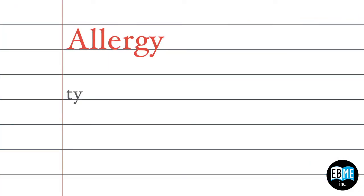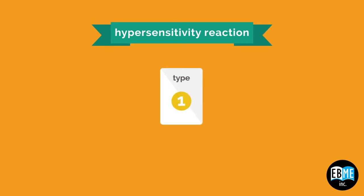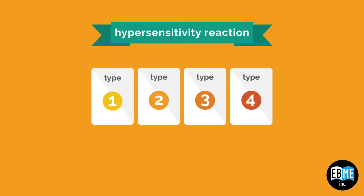An allergy, by definition, is a type 1 hypersensitivity reaction. There are four types of hypersensitivity reactions—1, 2, 3, and 4—by the Gell-Coombs classification.